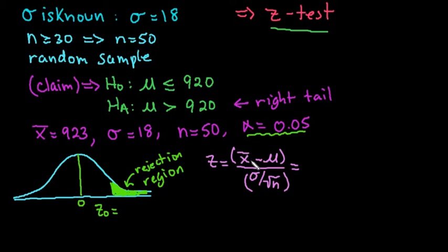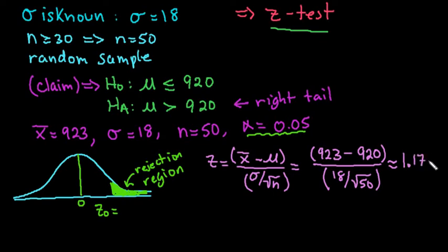So x-bar we would replace with 923. The population mean, mu, we would replace with 920. Sigma we replace with 18 and n we replace with 50. So this is what we would plug into our calculator and this gives us approximately 1.17851.